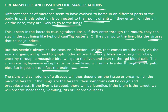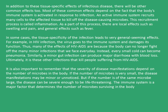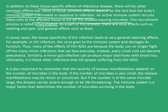The signs and symptoms of a disease depend on the tissue or organ which the microbe targets. If the lungs are the target, symptoms will be cough and breathlessness. If the liver is targeted, it will be jaundice. If the brain is targeted, we will observe headaches, vomiting, fits, or unconsciousness. In addition to these tissue-specific effects, there will also be common effects. Most depend on the fact that the body's immune system is activated in response to an infection. An active immune system recruits many cells to the affected tissue to kill off the disease-causing microbes — this recruitment process is called inflammation — producing local effects such as swelling and pain, and general effects such as fever.